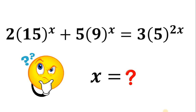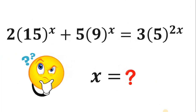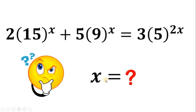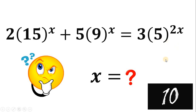Can you solve this math challenge? Here's the question: solve for the real value of x given that 2 times 15 raised to x, plus 5 times 9 raised to x, equals 3 times 5 raised to 2x. You can pause this video if you want to give this problem a try.